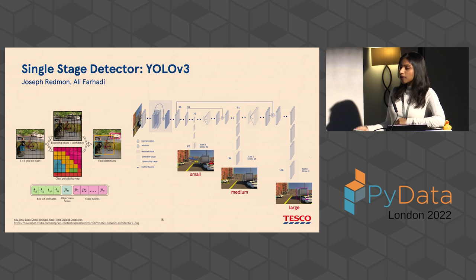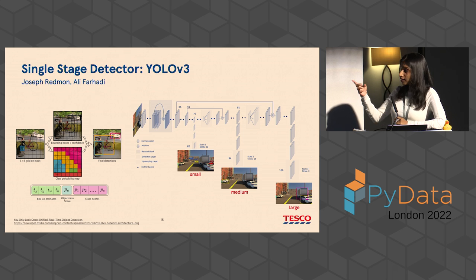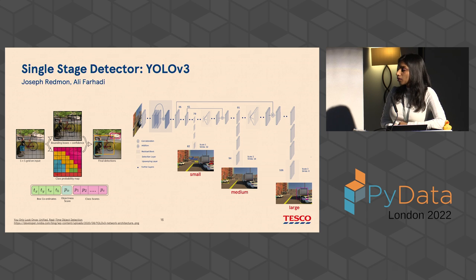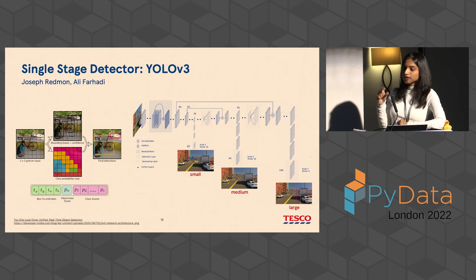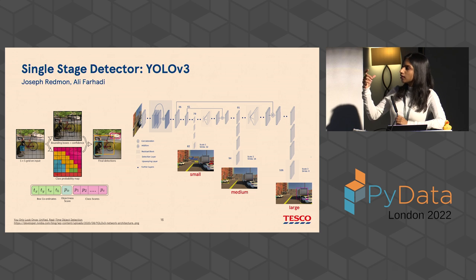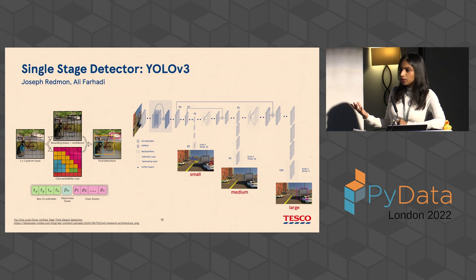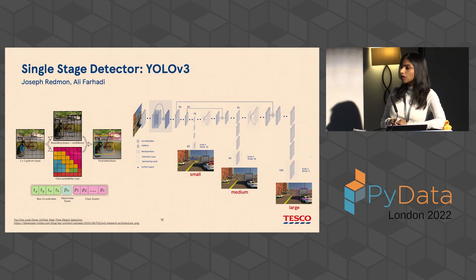Coming back to the three questions: the objectness score answers 'is there an object?', the box coordinates answer 'where is the object?', and the class scores answer 'what is the object?' Every cell always predicts a fixed number of objects, so there could be many predictions for background areas where there is no object. The objectness score takes care of this — you set a threshold and discard everything below it, keeping only detections that are likely to contain an object.